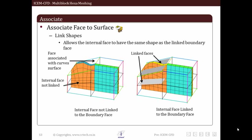Next in associate is link shapes option which allows internal faces to have same shape as linked boundary face. These faces can be unlinked by dissociating them. For this we need to select boundary face and associated internal face.